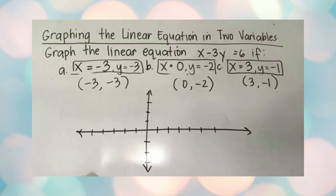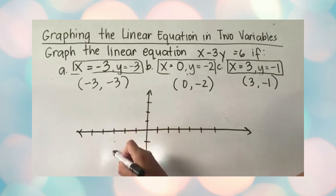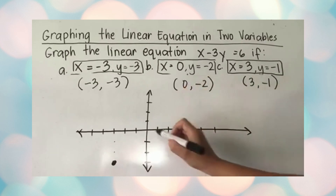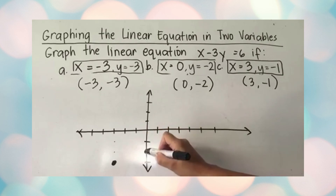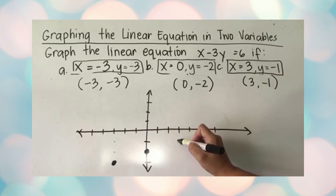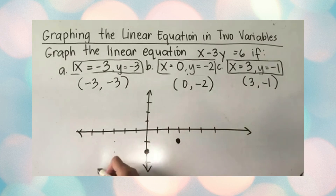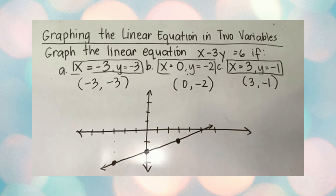On the Cartesian plane, plot negative three comma negative three: go three units to the left and three units down — that's the first point. Then plot zero comma negative two: x is zero, y is negative two — that's the second point. Then plot three comma negative one: go three units to the right and one unit down — that's the third point. Connect all three with a straight line, and this is the graph of x minus 3y equals 6.